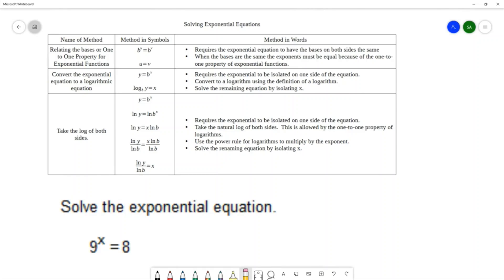We do have some other methods that will work for us to solve these equations. The first method is converting the exponential equation to a logarithmic equation. We would take an expression like y = b^x and rewrite that as a logarithm, and we're using the definition of a logarithm to do that. So this is going to require our exponent to be isolated on one side of the equation. Our exponential is isolated on one side of the equation, so we will be able to use that method.